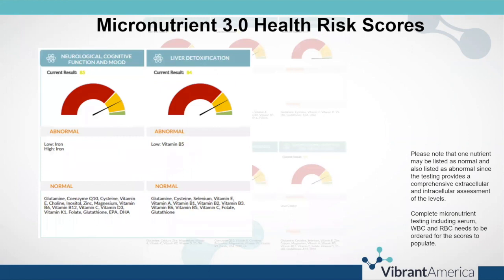The report provided gives a score for each category on a scale of 0 to 100. The contribution to the category score of each micronutrient is based on how important it is for the category, based on literature references and supporting evidence linking it to the respective category. Please note that a micronutrient might be essential for more than one category. The abnormal section beneath each category score lists the micronutrients which are high or low, and the normal section indicates those which fall in range.